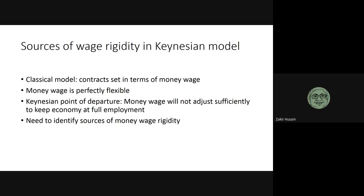For example, suppose price is 2. If you want a real wage of 5, you should bargain for a money wage of 10. In that case, your real wage will be 5. So if you have perfect information about prices, although you bargain for money wage, you are actually settling the real wage.